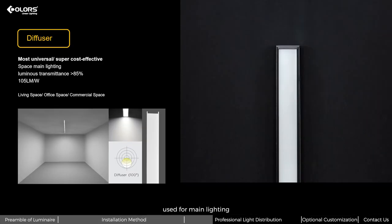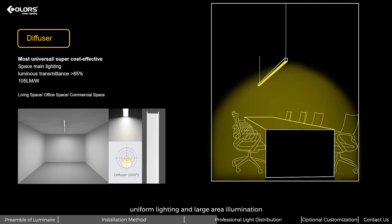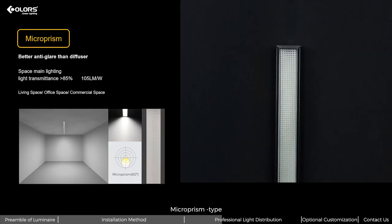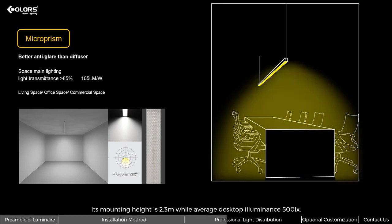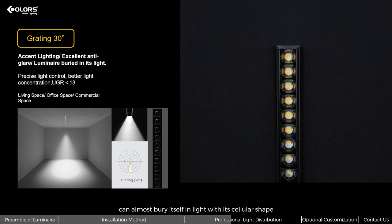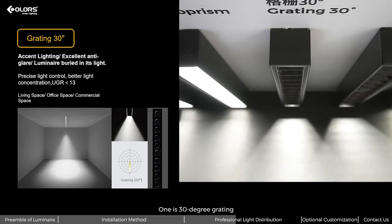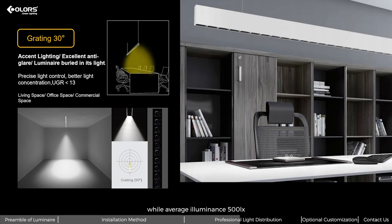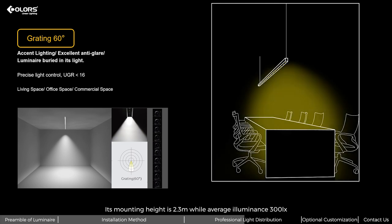The beam angle and mounting distance altogether determine the light efficiency. Diffuser type is used for main lighting, is the most universal and super cost-effective. It features 100-degree light emitting angle, uniform lighting, and large area illumination. Its mounting height is 2.5 meters while average desktop illuminance is 500 lumens. Microprism type retextures and reduces glare more extensively than the diffuser type. Its mounting height is 2.3 meters while average desktop illuminance is 500 lumens. Grating type often used for instant lighting can almost vary itself in light with its cellular shape. It can control light precisely and divides into two types. One is 30-degree grating, featured in less than 13 anti-glare. Its mounting height is 2.5 meters while average illuminance is 500 lumens. The other is 60-degree grating featured in less than 16 anti-glare. Its mounting height is 2.3 meters while average illuminance is 300 lumens.